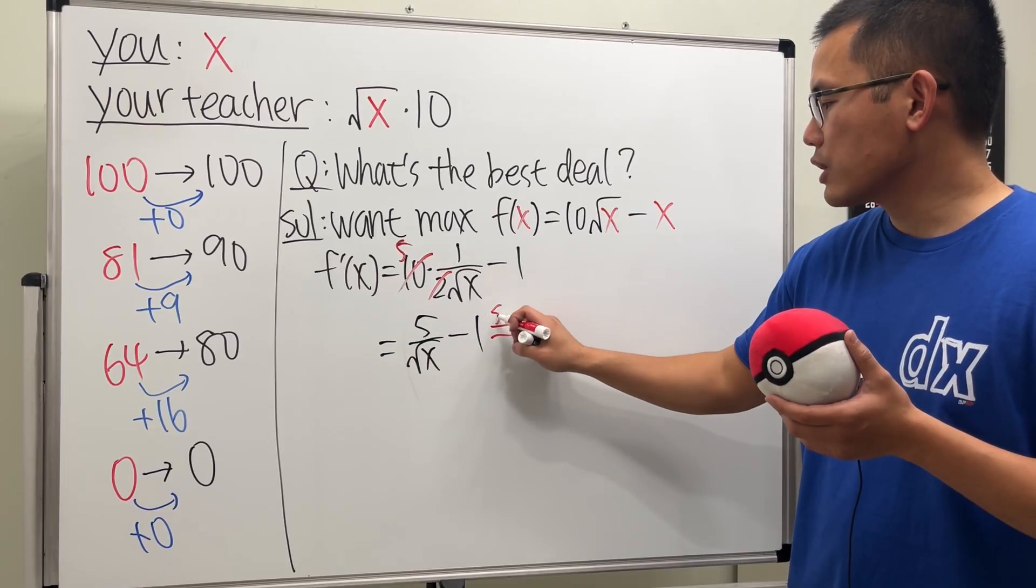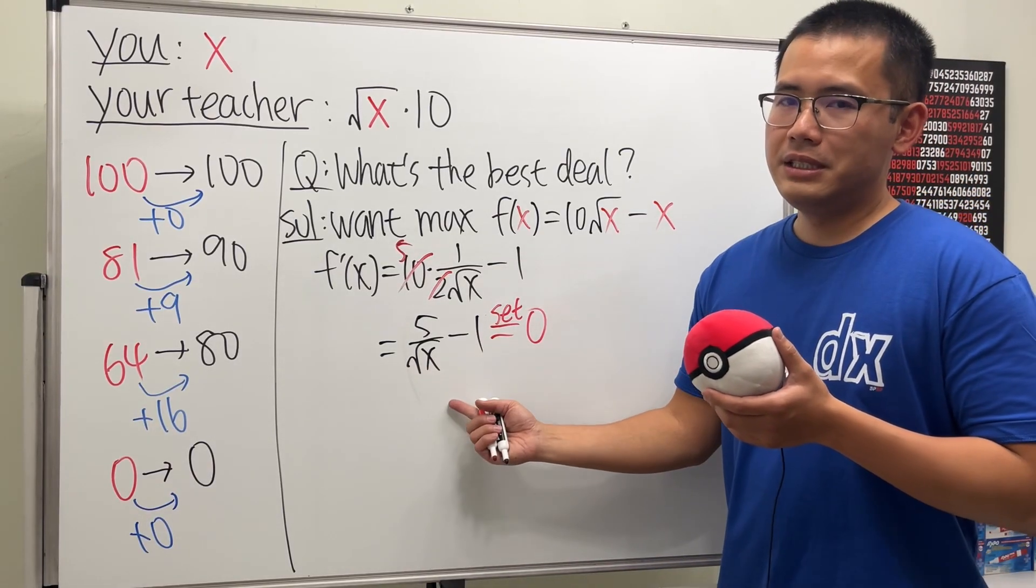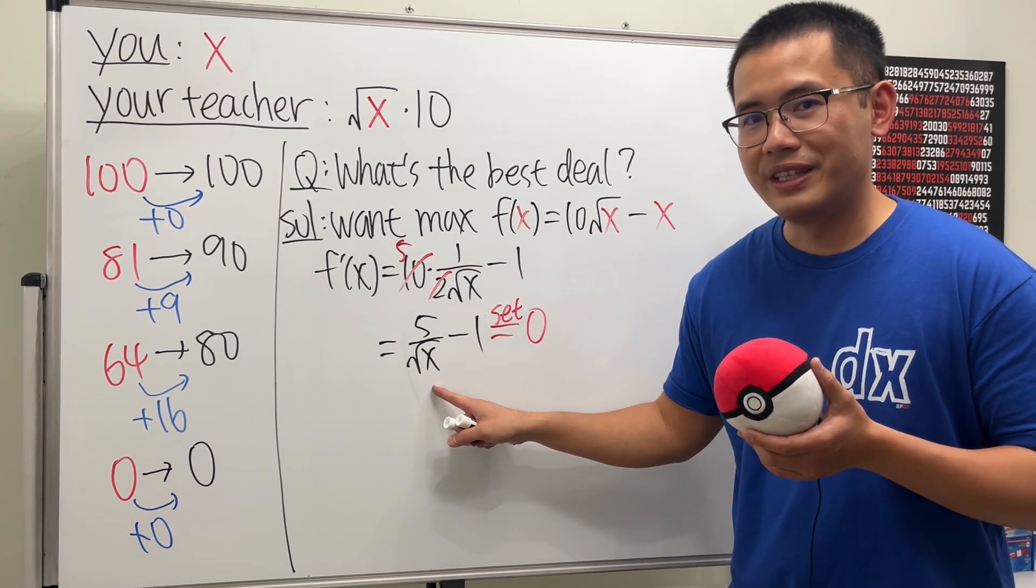That's the derivative. And now let's just go ahead and set this equal to 0. And we can just see this right here. Let's just look at this and solve it. x has to be what? 25.